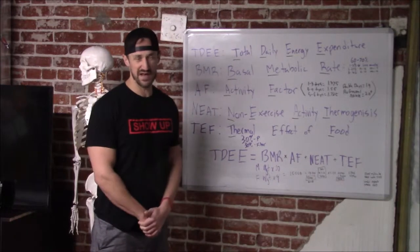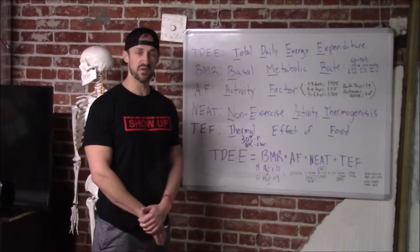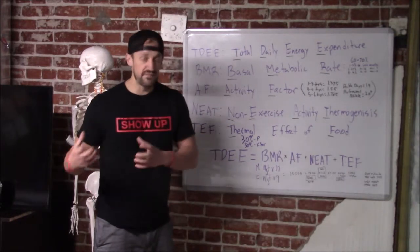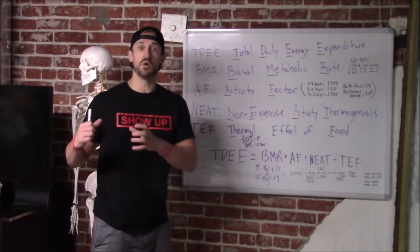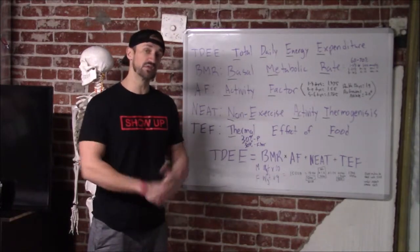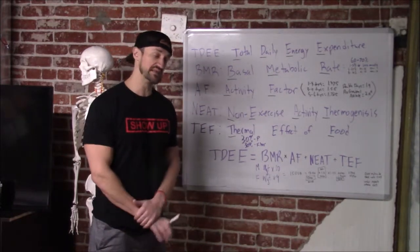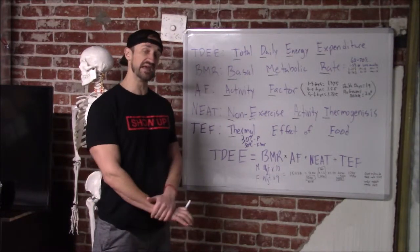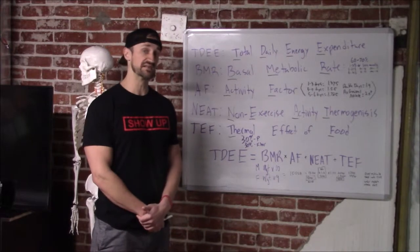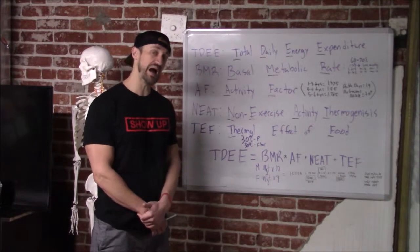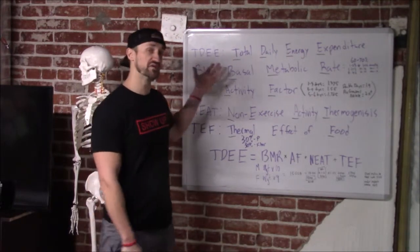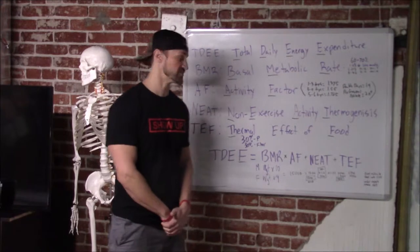You get a lot of comments — people will get upset saying quality of food is so important, which it is. But the first thing that we need to address in the nation today, being overweight and obese, is the quantity — how much we're consuming — and that's going to be the total daily energy expenditure equation.